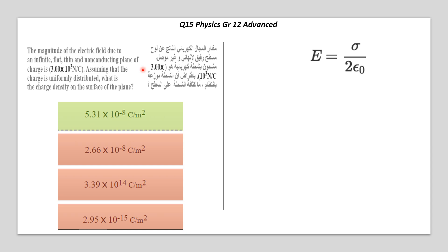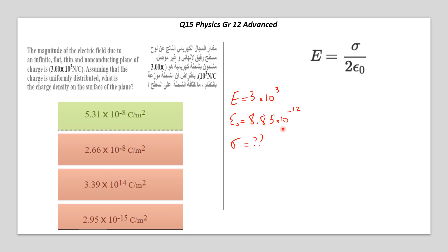To answer this question, you need to remember the equation for an infinite plane: the electric field is equal to sigma (charge density) divided by 2 epsilon-zero. The electric field is given, epsilon-zero is a known constant (provided on the first page of the exam), and the only unknown is the charge density sigma. Rearranging the equation gives the answer: 5.31 × 10⁻⁸.